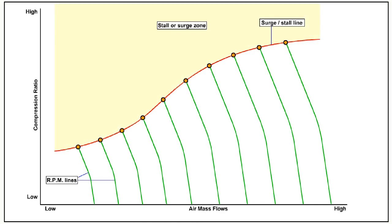Engine operation at compression ratios or mass air flow values above this line will promote compressor stall and surge. A line is also drawn connecting points on the graph where the engine is operating at RPMs where the compression ratio and the air mass are proportionally matched. This is called the normal operating line.